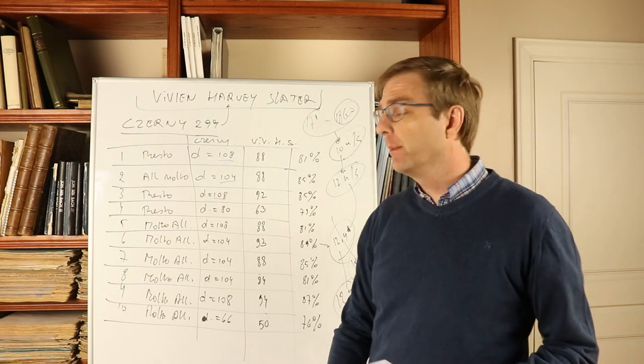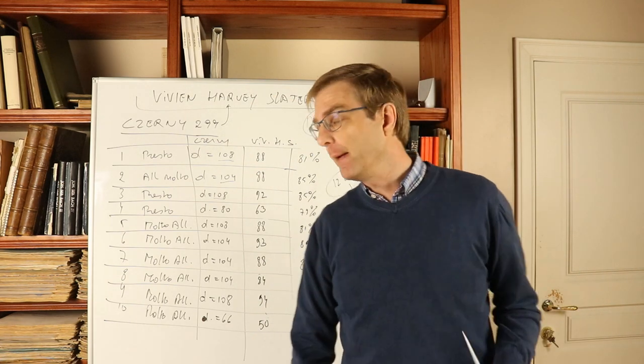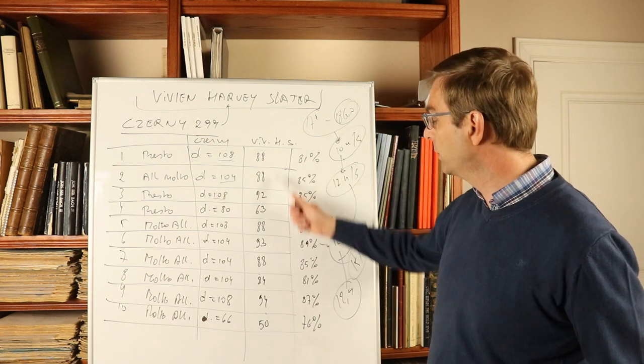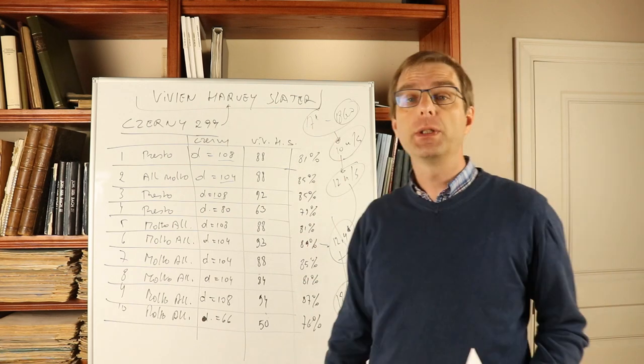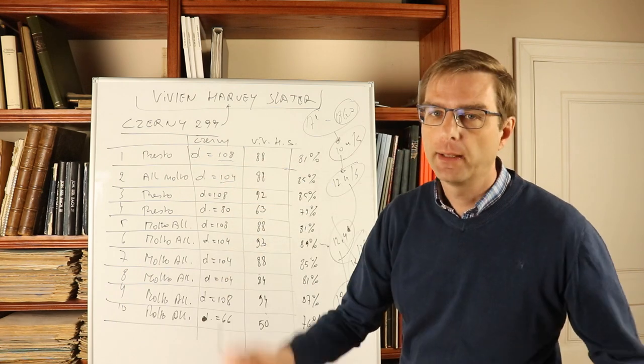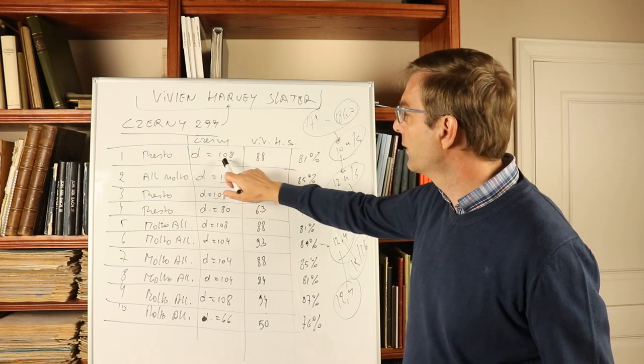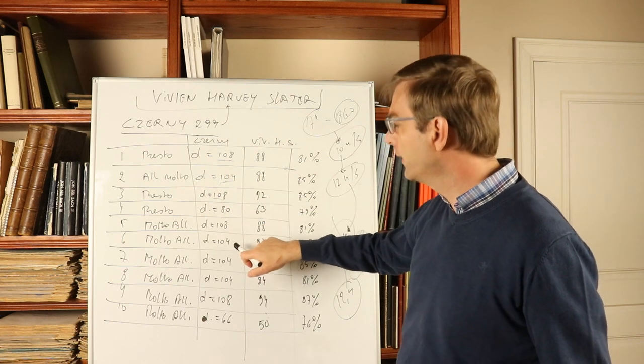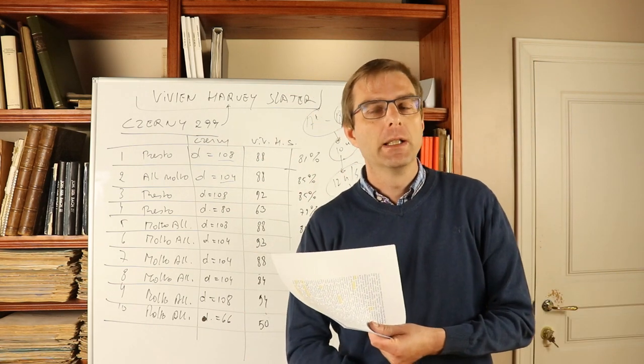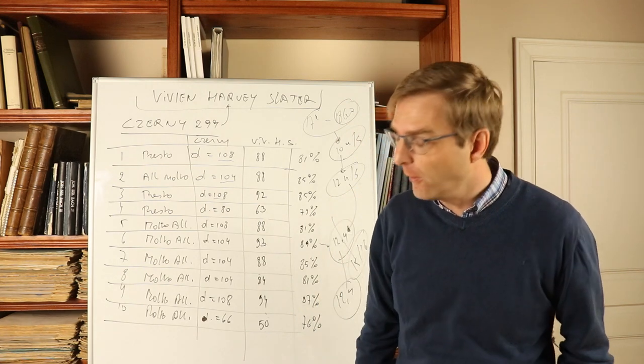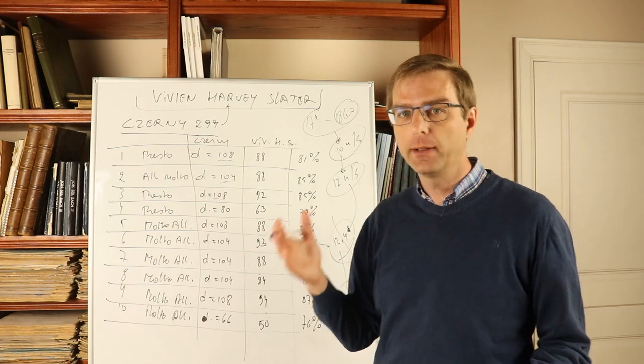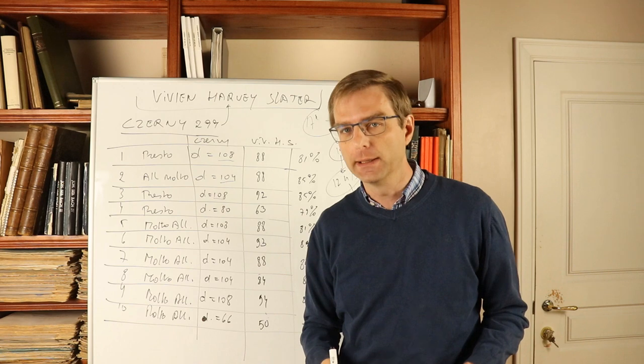A lot of people say these tempi of Czerny, they're just goals, targets, they're not aimed to really accomplish those incredible speeds, so the tempi that Vivian Harvey Slater reaches are enough. Well, if you see already 108, 104, 108, 108, 104, he could have well said as fast as possible. This is contrary to the whole tradition in the 19th century that's been described so many times: that the metronome indications given by the authors, by the composers, are actually accurate tempo indications. There's no doubt about this.